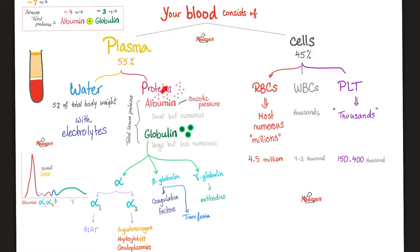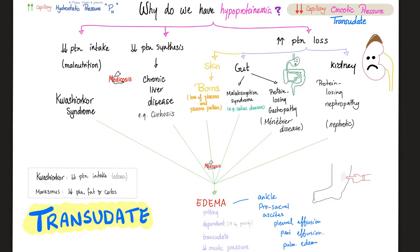If I perform serum protein electrophoresis, I get a characteristic graph. Here is albumin — the most abundant — with the largest spike. Followed by alpha-1 globulin, alpha-2 globulin, beta globulin, and gamma globulin.